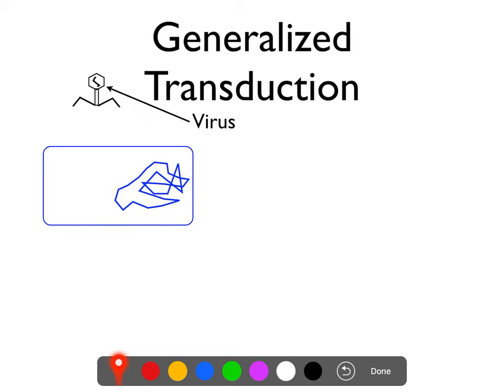The second mechanism is transduction. Transduction is horizontal gene transfer where the genetic material is transferred by means of a viral intermediate. There are two types: generalized and specialized. This is why it was important to talk about viruses first. There are two types of viruses: virulent and temperate. Virulent phages all do the lytic cycle; temperate phages can do either the lytic or lysogenic cycle, and that makes a difference.